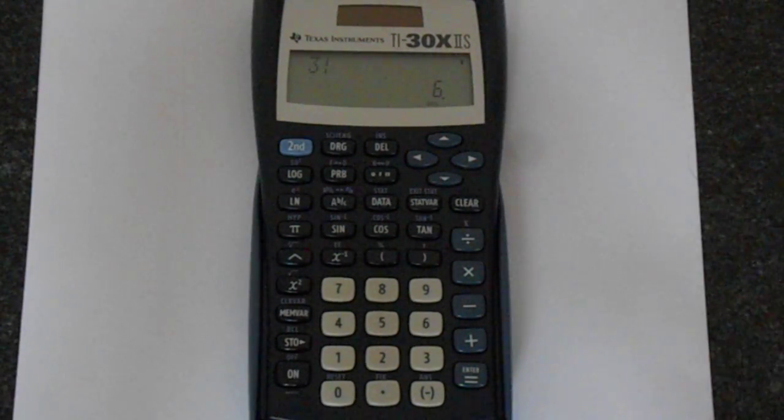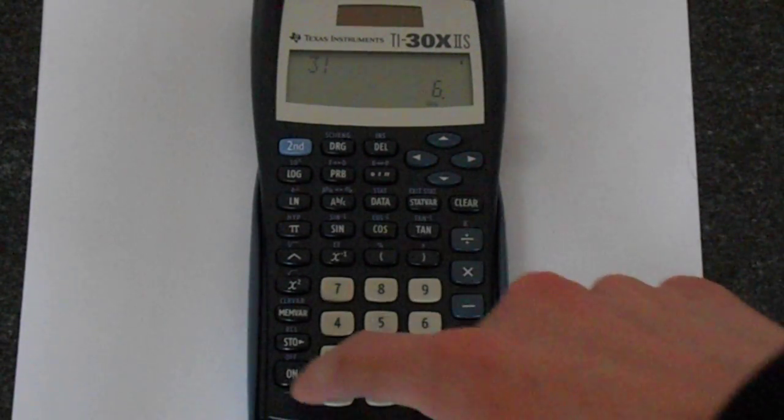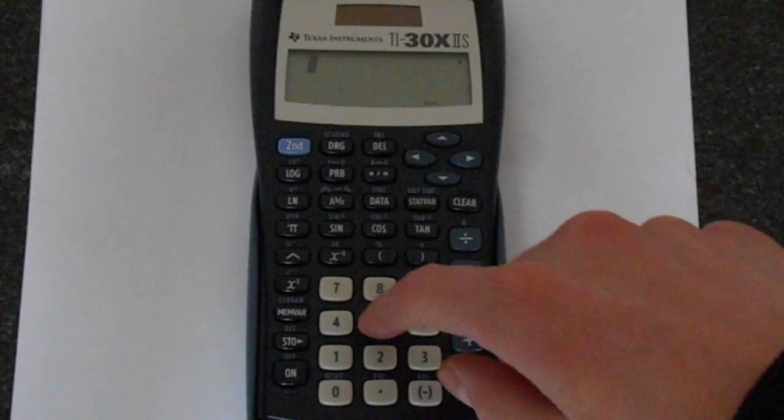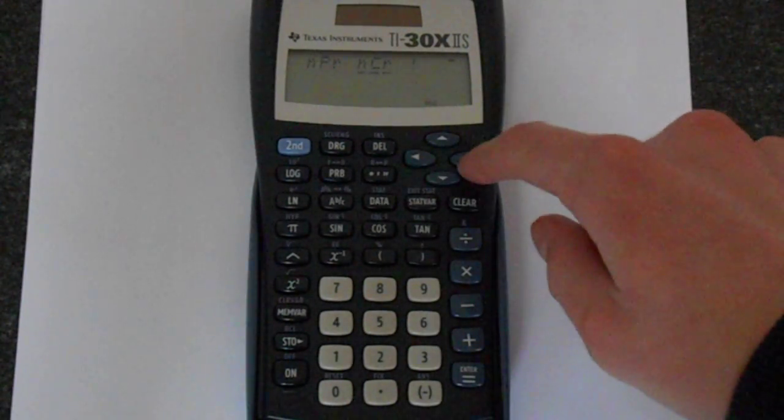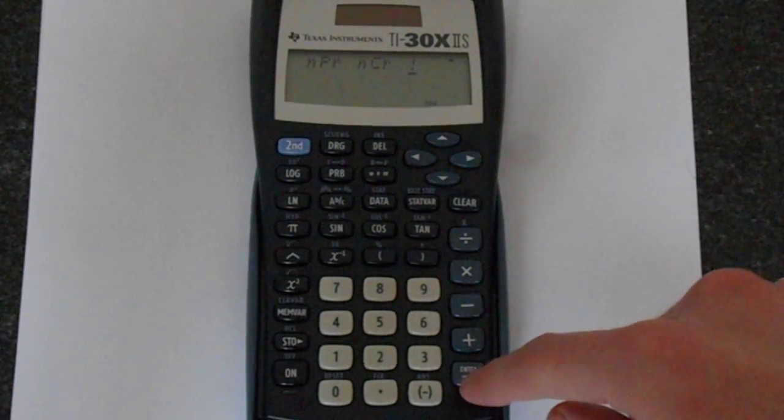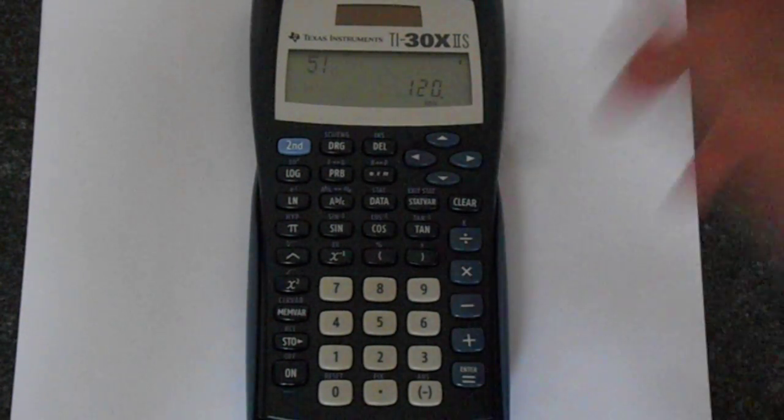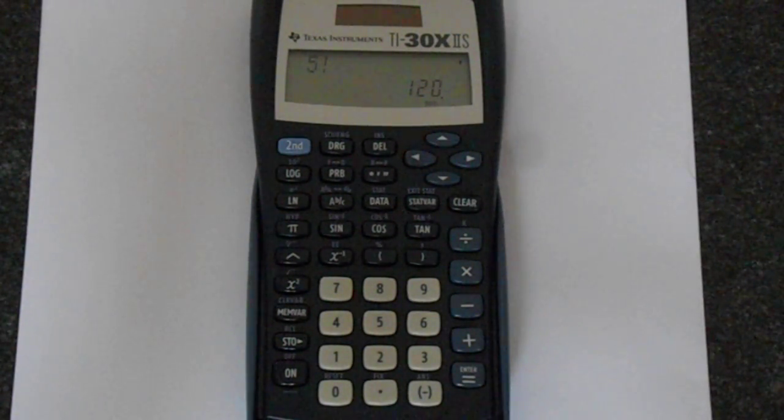That's how you do factorials. I'll show you that again quickly. Clear that. Let's go 5, probability, underline, factorial, Enter, and then Equals. We get 5 factorial, which is 120.